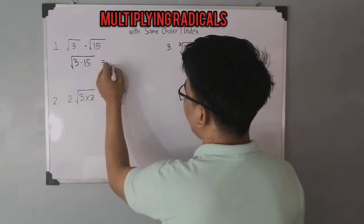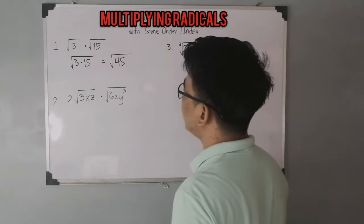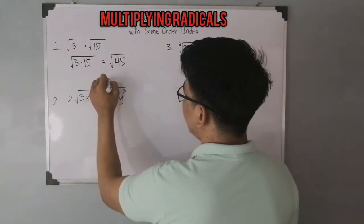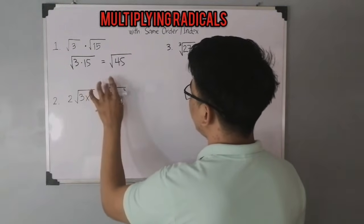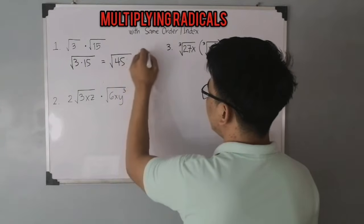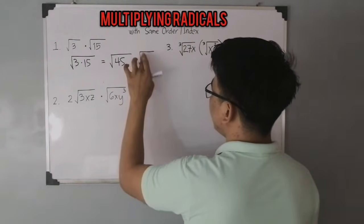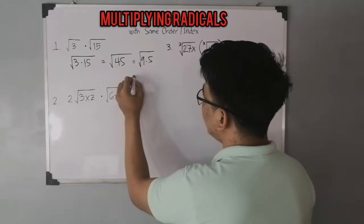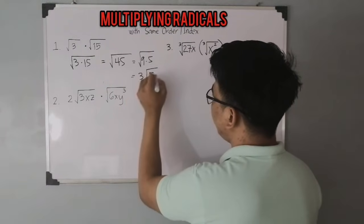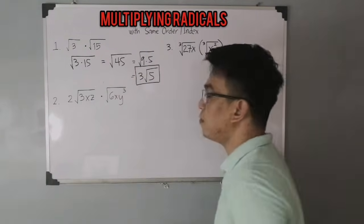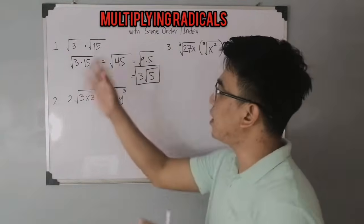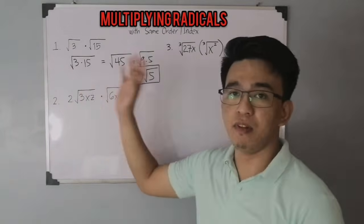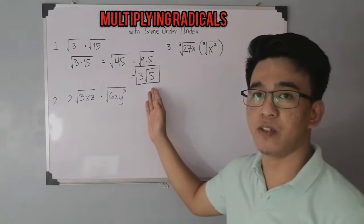Simplifying this gives you the square root of 45. We can still simplify the square root of 45, which equals the square root of 9 times 5. Simplifying that gives you 3 square root of 5. This is the correct answer for item number 1 — after copying the radical sign, multiply the radicands and simplify.